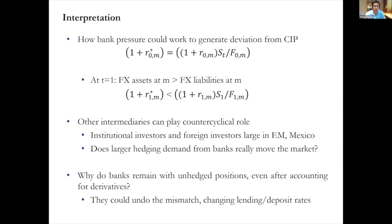Another question is why banks remain in unhedged positions even after accounting for derivatives — for example, remaining long in dollars. For banks it should be fairly simple to undo the mismatch by changing lending rates or deposit rates. It seems banks are choosing to hold that position and not unwinding it. That leads me to question the extent to which this mismatch is really generating pressure to hedge, given that in equilibrium they remain in that place.